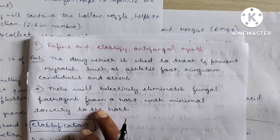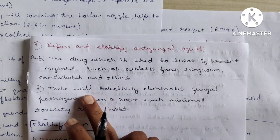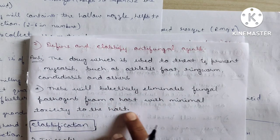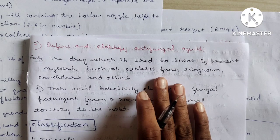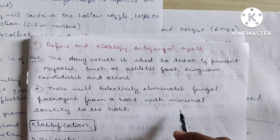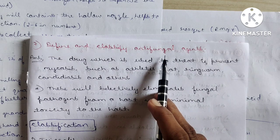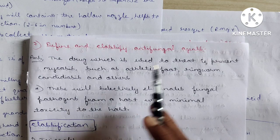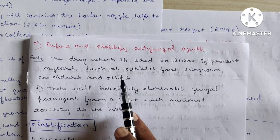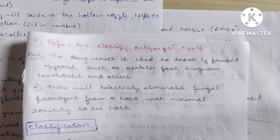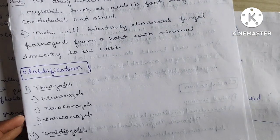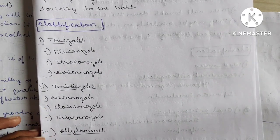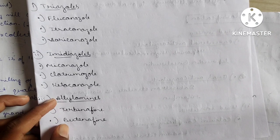Question 7: Define and classify antifungal drugs. Antifungal drugs treat and prevent mycoses such as athlete's foot, ringworm, and candidiasis. They selectively eliminate fungal pathogens from the host with minimum toxicity. Classification: Triazoles — fluconazole, itraconazole, voriconazole. Imidazoles — miconazole, clotrimazole, ketoconazole. Allylamines — terbinafine and butenafine.